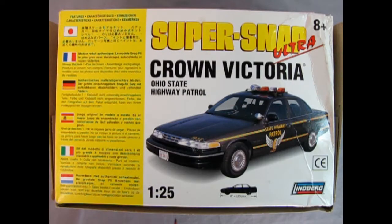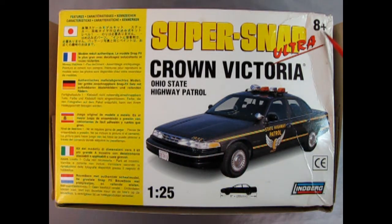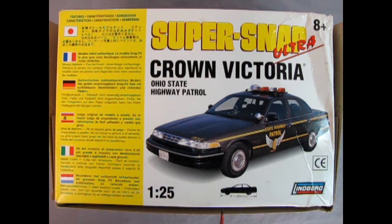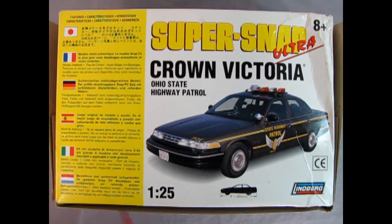On the bottom of the box we have more details about our Crown Victoria. It's intended for ages 8 and up. The model kit is 8 inches in length, which is 20 centimeters. The instruction sheet includes Japanese, French, German, Spanish, Italian and Dutch. You get a lot of cool things in this model.